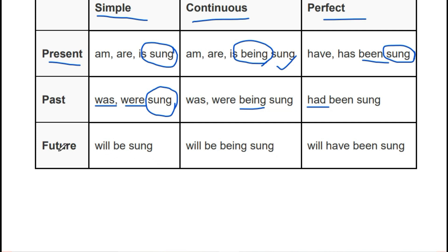For future tenses: 'I will write a letter' → 'A letter will be written by me.' 'I will be writing a letter' → 'A letter will be being written by me.' If it is future perfect: 'I will have written a letter' → 'A letter will have been written by me.' So this is how we handle all these tenses. This is your at-a-glance reference to understand passive voice in a much better way.